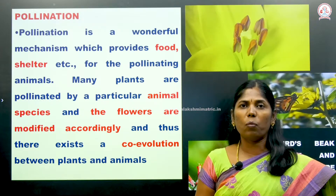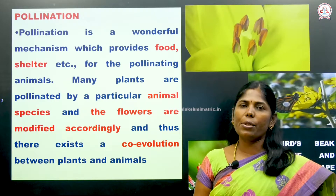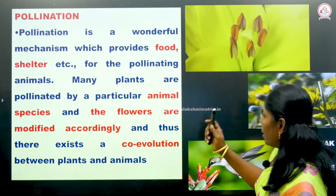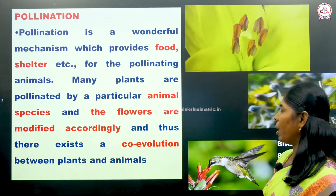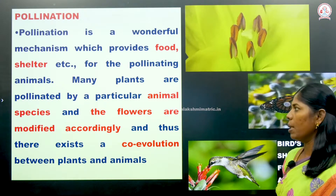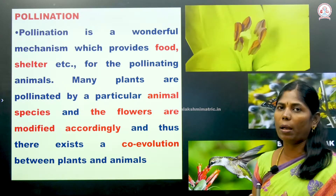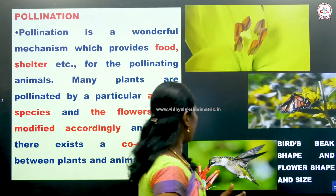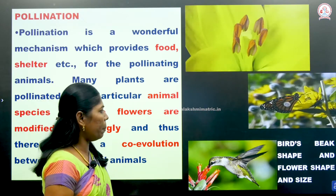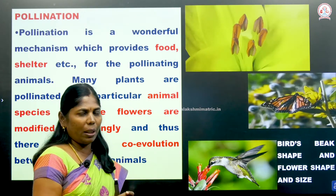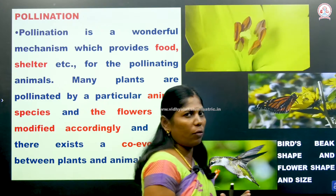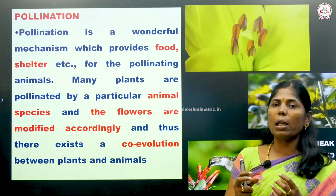What animals are involved in cross pollination? Flowers are pollinated by particular animal species, and the flowers are modified accordingly. There exists a co-evolution between plants and animals — for example, a bird's beak shape and the flower shape are similar to each other. That is co-evolution.